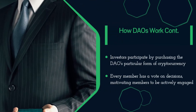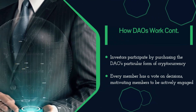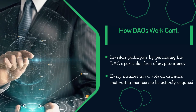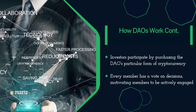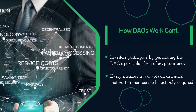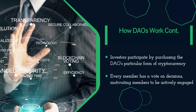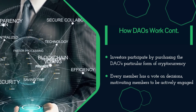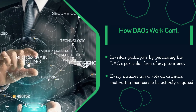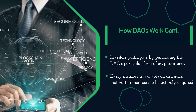Once rules have been conceptualized, ideated, and finalized, they are hard-coded through smart contracts. Usually, once this is complete, DAOs initiate a funding phase, inviting investments from anyone who wants to put money into the organization. Investors participate by purchasing the DAO's particular form of currency. Once funding is complete, the DAO is operational and makes decisions through collective consensus.